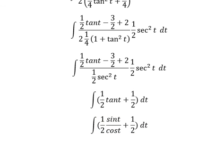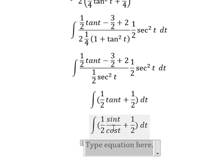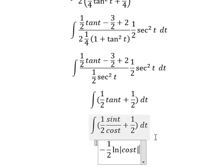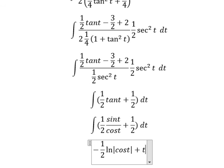And now we get the final answer. The integral of this one, you get about negative 1 over 2 ln of the absolute value of cos t, plus t over 2, plus c.